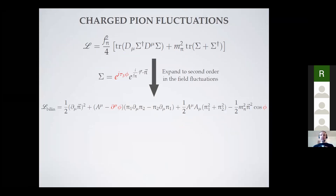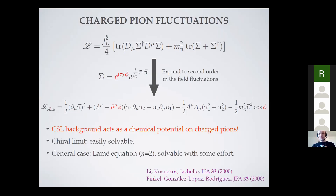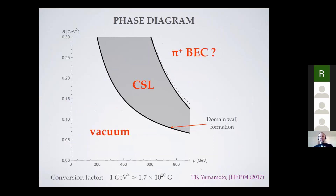Then there are the charged pions. One might want to reintroduce them into the effective theory and ask how charged pion fluctuations behave on the non-trivial solitonic background. The result is interesting: the crystalline modulated ground state behaves as a kind of chemical potential for charged pions. The spectrum for charged pions can be solved analytically, though it leads to something called the Lamé equation. Both the phonons and the charged pions show a band structure, as expected in crystals.